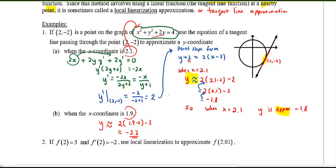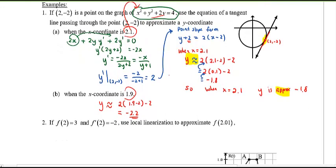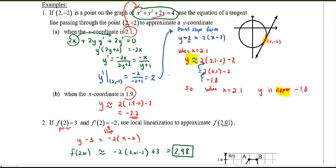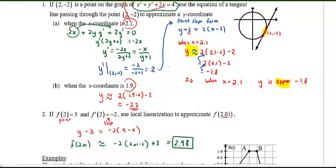Now, sometimes they might not give you an equation. They might only give you pieces of information. So with this limited amount of information, can you figure out the local linearization to approximate this value of y when x equals 2.01? Well, this hopefully gives you enough information. Here's your point. Here's your slope at that particular value. Great. So y minus 3 equals negative 2 bracket x minus 2. And then once again, approximate this by plugging in 2.01. So f of 2.01 will be approximated by negative 2 times 2.01 minus 2, and then don't forget, plus 3. Doing these calculations, I think I get the answer of 2.98. All right? And there you go. That's local linearization or the tangent line approximation.